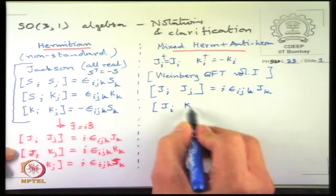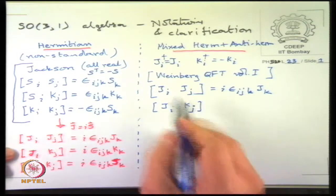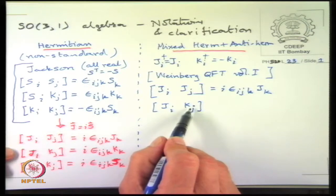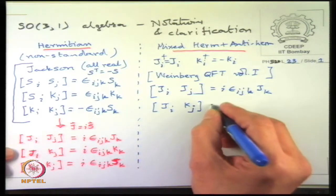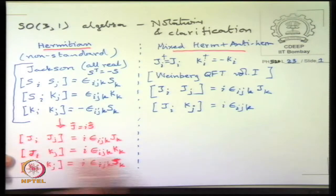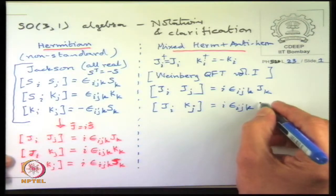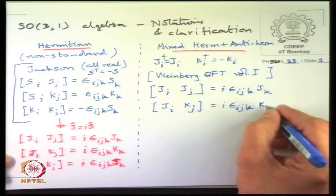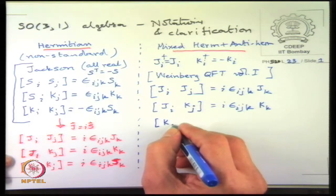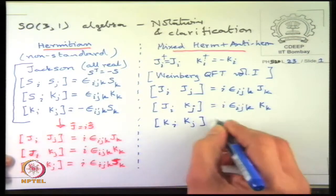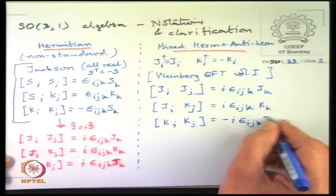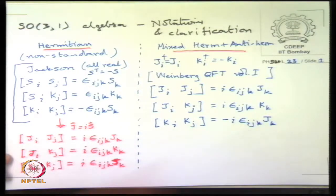Let us remember: rotation-rotation produces a rotation; acting with rotation on a boost produces a boost. So [J_i, K_j] = i epsilon_{ijk} K_k. The third line — boost-boost, i.e. [K_i, K_j] — turns out to equal minus i epsilon_{ijk} J_k. Two boosts lead to a rotation, but with a minus sign.